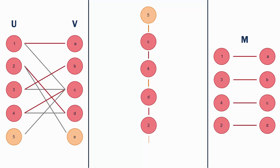Eventually, we hit an unmatched vertex in V. Our layering graph is now 5 deep, so that will be the minimum augmenting path at this stage. We add all found unmatched vertices in V to the set F, in this case just V5. Like before, we use a depth-first search to find a path from a vertex in the set F to an unmatched vertex in U. This is straightforward in this example.